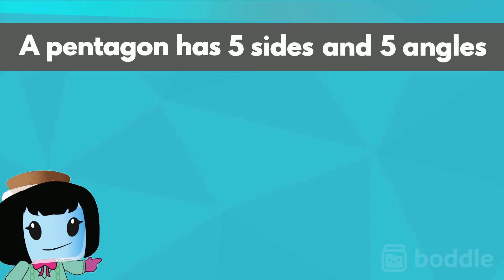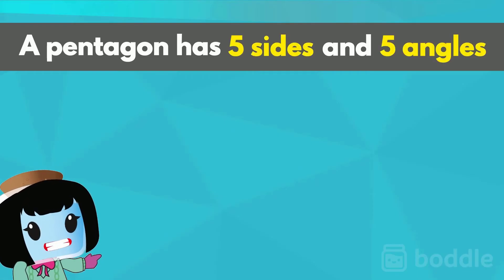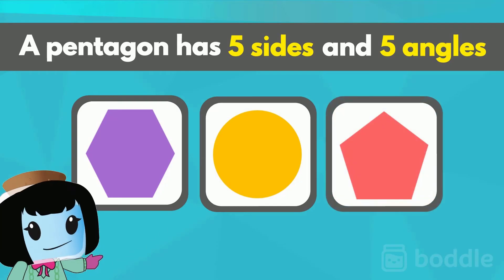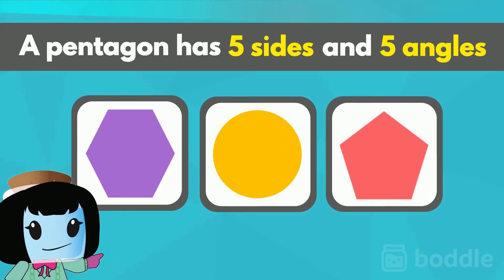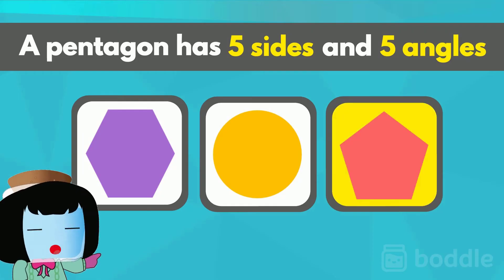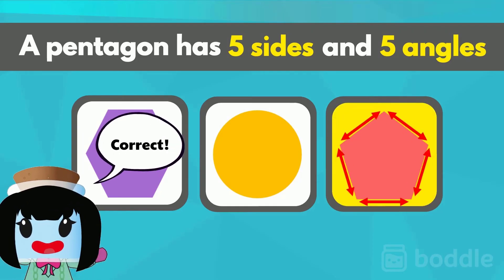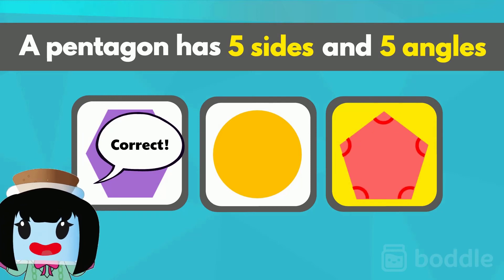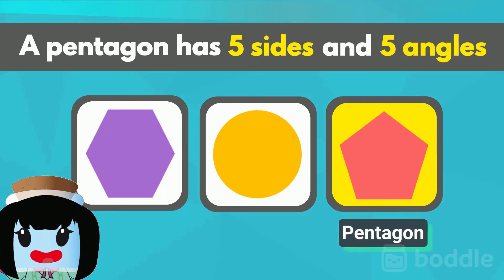A pentagon has five sides and five angles. Which of these following shapes is a pentagon? Did you pick this shape? You are correct. It has five sides and five angles, so it is a pentagon.